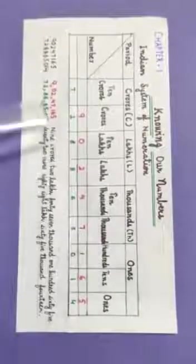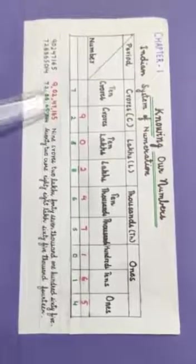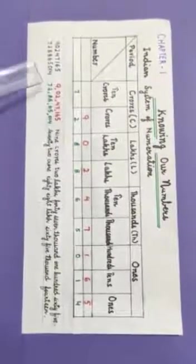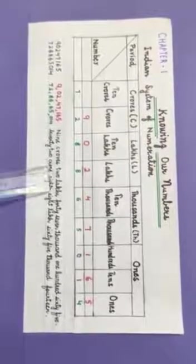The numbers can be written like that. As you can see here, we put the commas after the last 3 digits, then 2, and then 2. It will be read as 9 crores, 2 lakhs, 47,165.